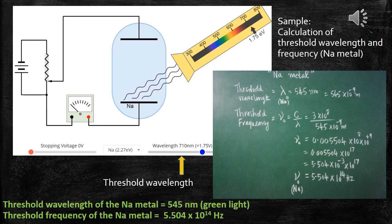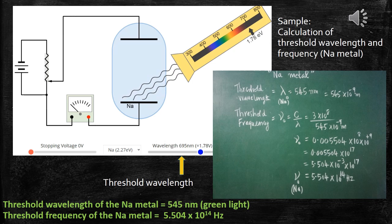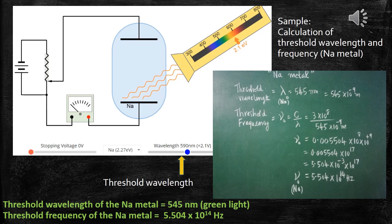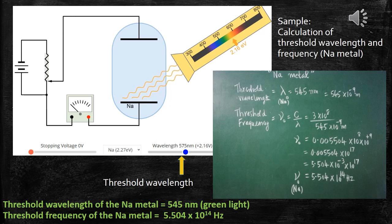If the frequency is greater than 5.504 into 10 to the power of 14 hertz, or if the wavelength is lesser than 545 nanometers, what will happen? The electrons which are ejected out from the metal surface will gain kinetic energy. When the frequency is further increased or the wavelength is decreased, the photoelectrons will gain kinetic energy.